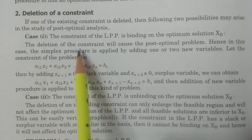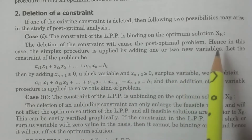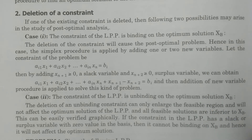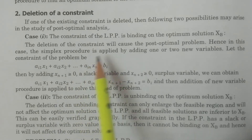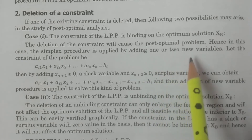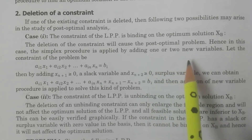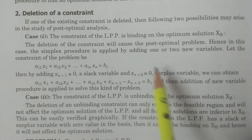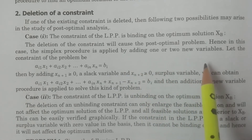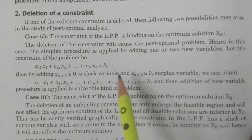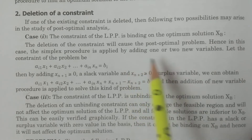Case one: the constraint of the LPP is binding on the optimum solution. If it is binding, then deletion of the constraint will cause a post-optimal problem. In this case, we have to apply the simplex procedure by adding one or two new variables. So if you want to delete a constraint, what we want to do is add one or two new variables.